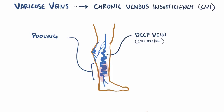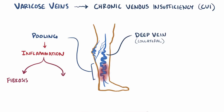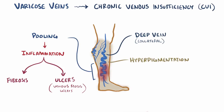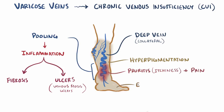With CVI, the stagnant blood in the lower extremities starts to cause an inflammatory reaction in the vessels and the surrounding tissue, which leads to fibrosis and potentially even ulcers, called venous stasis ulcers. Other symptoms of CVI include hyperpigmentation or darkening of the skin, as well as pruritus or itchiness, and pain. There can also be a lot of edema as some of this fluid starts to leak out of the veins and into the surrounding tissues of the ankles and lower legs.